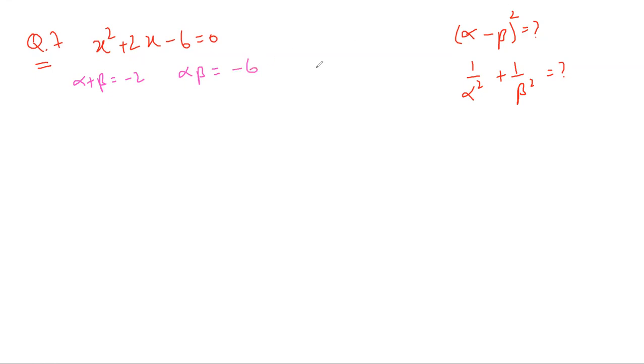So alpha minus beta whole squared is basically alpha squared plus beta squared minus two alpha beta. So we have this alpha beta, but we don't have this alpha squared plus beta squared. But we have the formula for that.